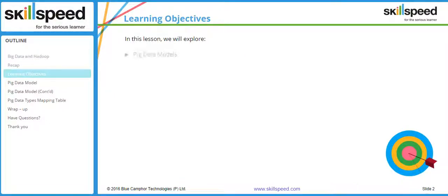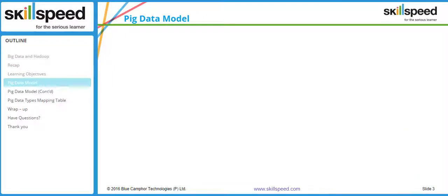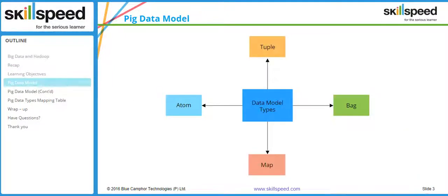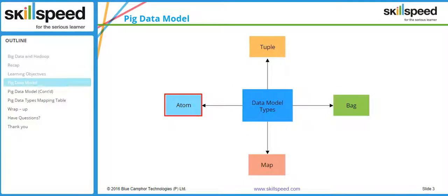In this particular lesson we'll be learning about different data models inside Pig, such as tuple and atom. If you look at the screen right now you can see the different data models used inside Pig. These data models are complex data types. Pig supports regular data types as well as complex data types. The different complex data types are atom, tuple, bag, and map.